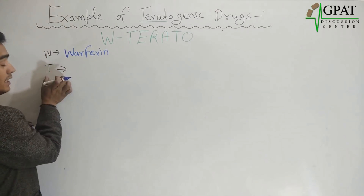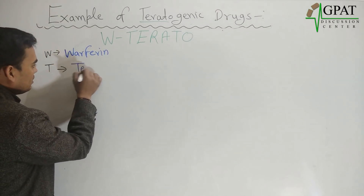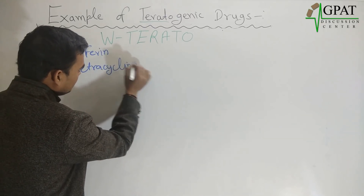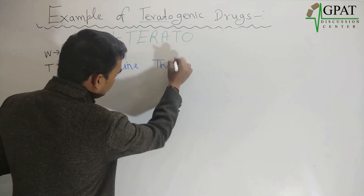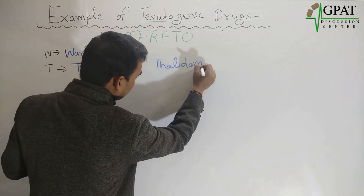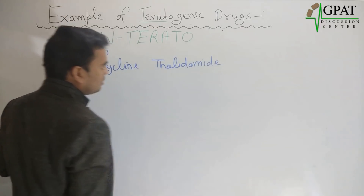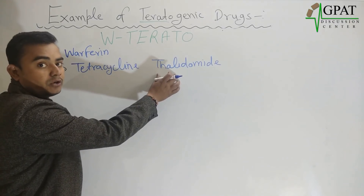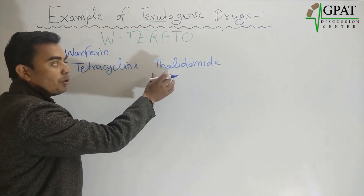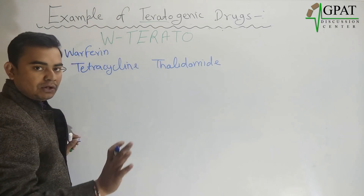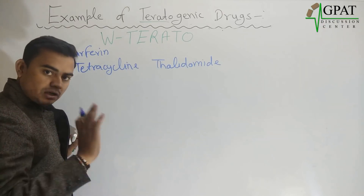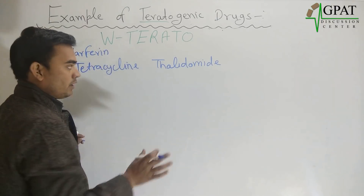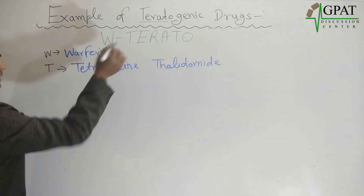Next, T — the drugs for T are tetracycline and thalidomide. This is a very important question for your pharmacology duty exams. Many times the question asks: which of the following is a teratogenic drug, or which of the following is not teratogenic? So make sure this topic is very important for you. Thalidomide.